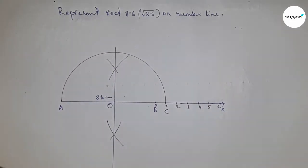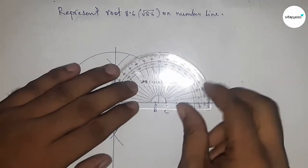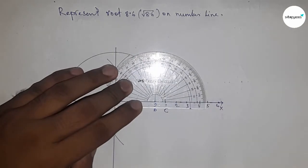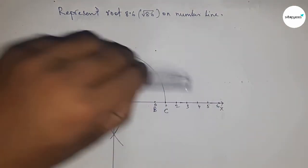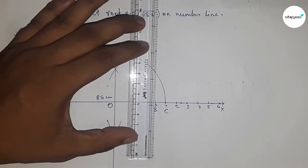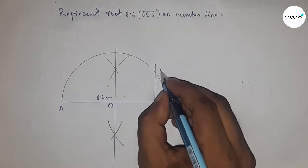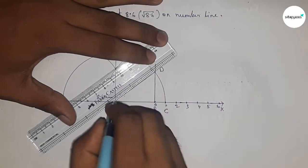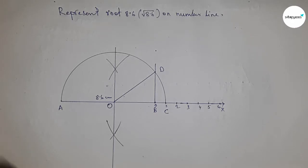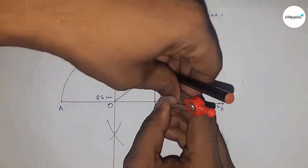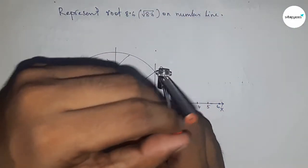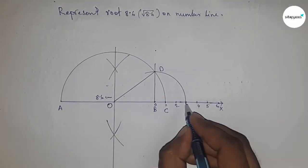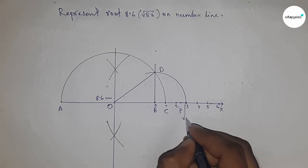Next, draw a 90-degree angle at point B using a protractor. Join this line, which meets at point D. Now take the distance BD using a compass to draw an arc which meets the number line at point P. This is the representation of root 8.6 on the number line.